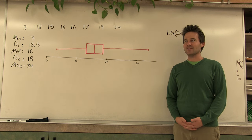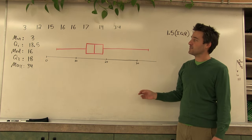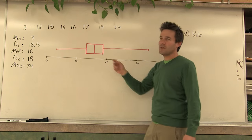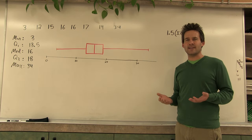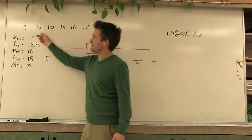Today we're going to learn to find outliers and to create a modified box plot. Here's a standard box plot that utilizes this five-number summary from this data. Outliers are numbers that are outside the group of the rest of the data. So right here is the data.